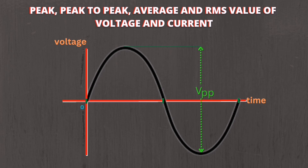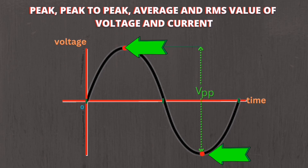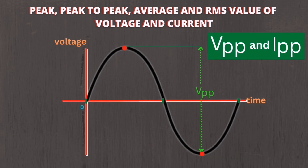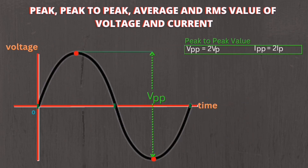Next is the peak-to-peak value of voltage or current. Peak-to-peak value is the difference between the highest point to the lowest point in the graph. The peak-to-peak value can be denoted as V-double-P or I-double-P. The formula for V peak-to-peak and I peak-to-peak are: V peak-to-peak equals 2 times V-sub-P, and I peak-to-peak equals 2 times I-sub-P.